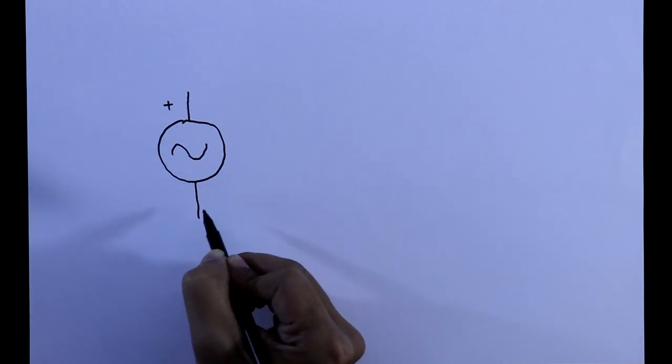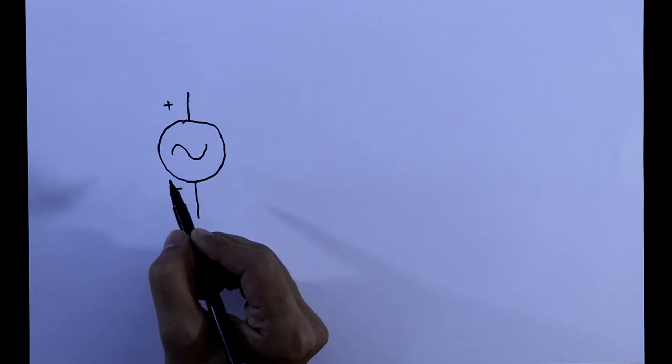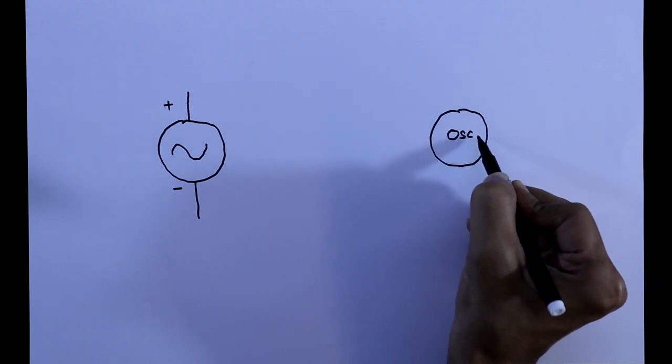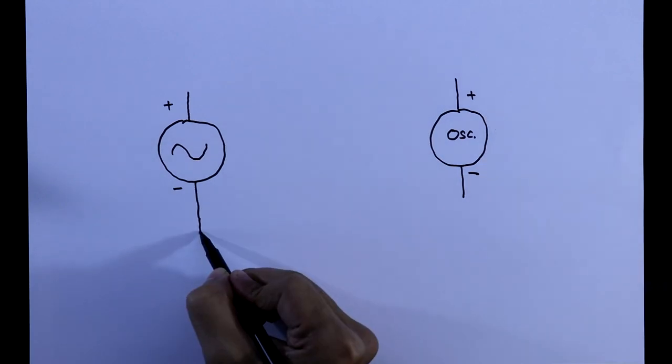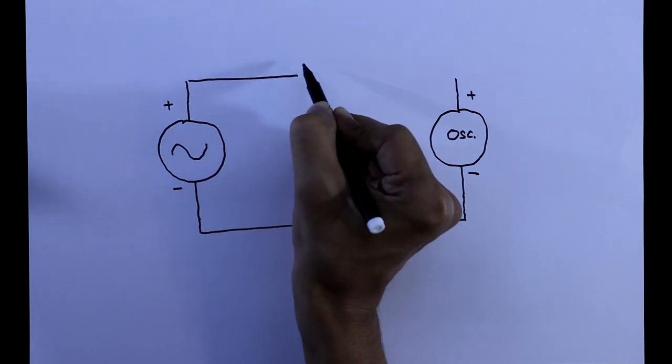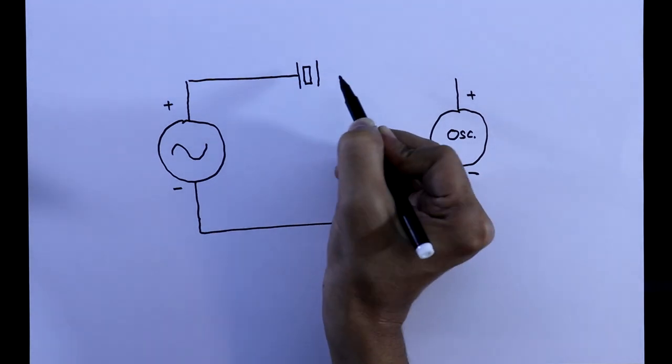This is the positive probe and this is the negative. And here is the oscilloscope. This is negative probe and it is positive. We have to connect both the negative and here we have to connect the crystal oscillator.